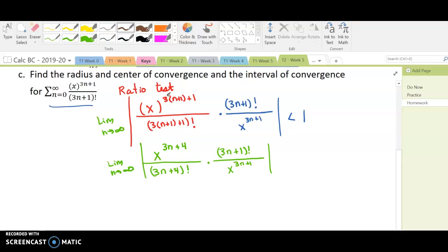When I multiply 3 times n I get 3n. 3 times 1 is 3 plus 1 is 4, so we have 3n plus 4 here. Same thing in the denominator, 3n plus 4 factorial. The original was just 3n plus 1 factorial and x to the 3n plus 1. So those are rewritten.